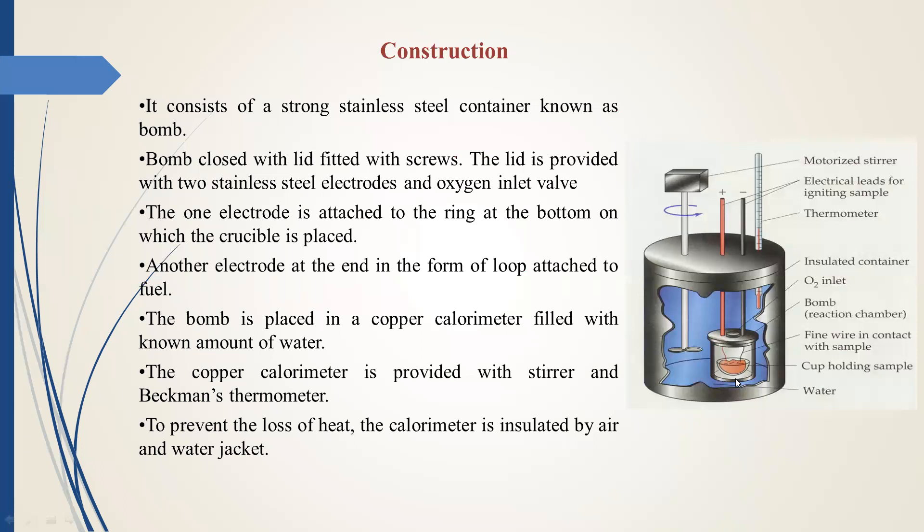One electrode is attached to the ring at the bottom on which the crucible is placed. Another electrode at the end is in the form of a loop attached to the fuel.